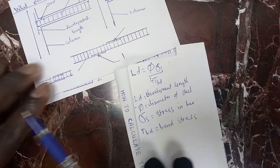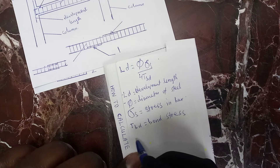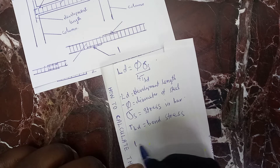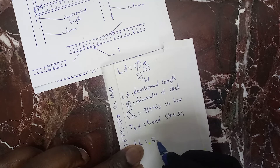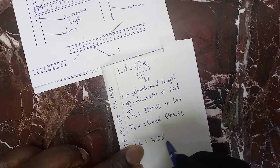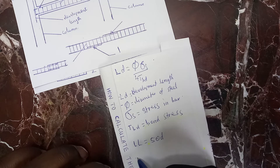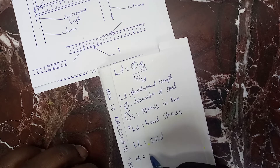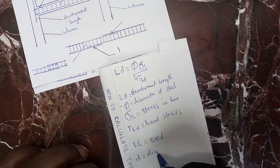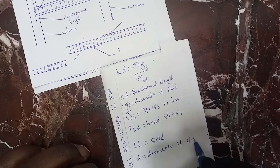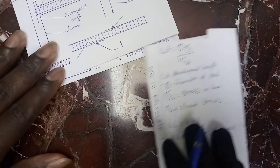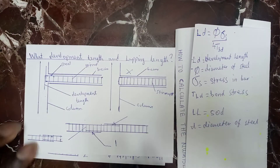The formula for lapping length: LL is equal to 50D, where D is equal to the diameter of steel. I hope you can see everything clearly.